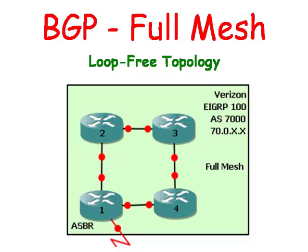Logical full meshes can also be created with route reflectors and confederations, and we will examine this approach in future videos. The problem with having a simple full mesh is that if you have thousands of routers, you will have to have a lot of neighbor statements connecting each one of them. Route reflectors and confederations help to eliminate this problem.